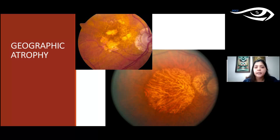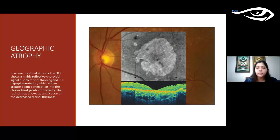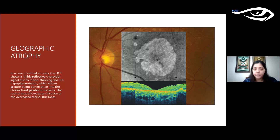As dry AMD progresses, it results in geographic atrophy — areas where the retina undergoes thinning. Below those areas of atrophy we can see the choroidal vasculature, and the retinal layers on top are absent. On OCT, as the retinal layers atrophy, the light beam penetrates much better to the choroid, giving a highly reflective choroidal signal in the area corresponding to geographic atrophy, with absent retinal layers above it.